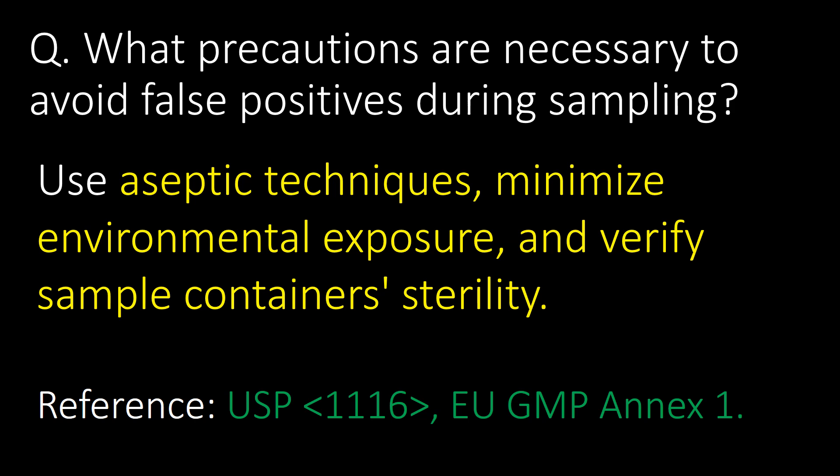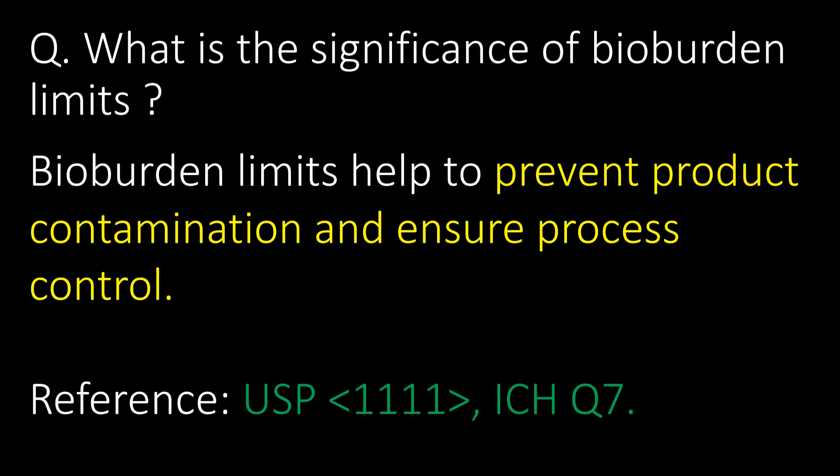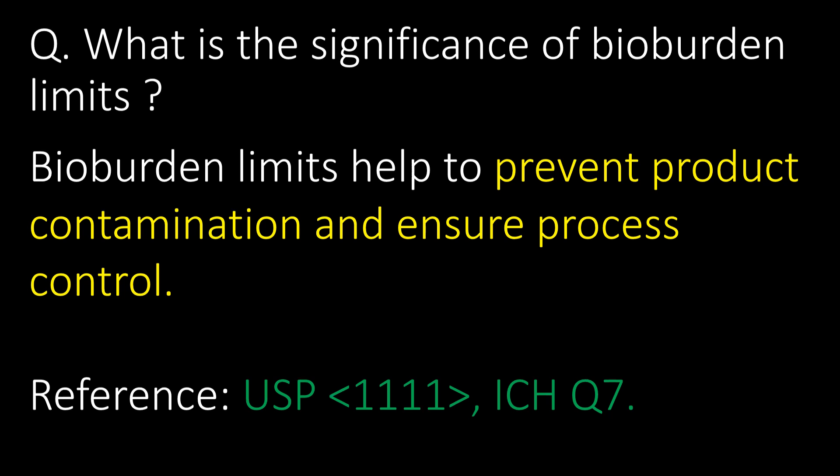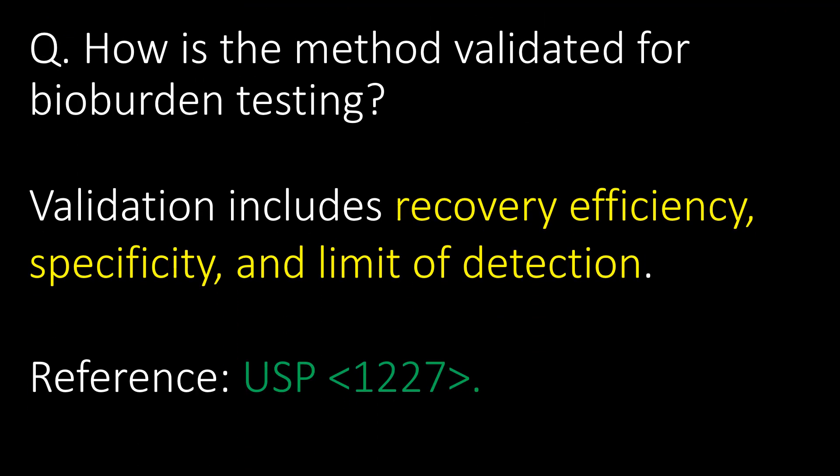What is the significance of bioburden limits? Bioburden limits help to prevent product contamination and ensure process control. Reference USP Chapter 1111 and ICH Q7. How is the method validated for bioburden testing? Validation includes recovery efficiency, specificity, and limit of detection. Reference USP Chapter 1227.